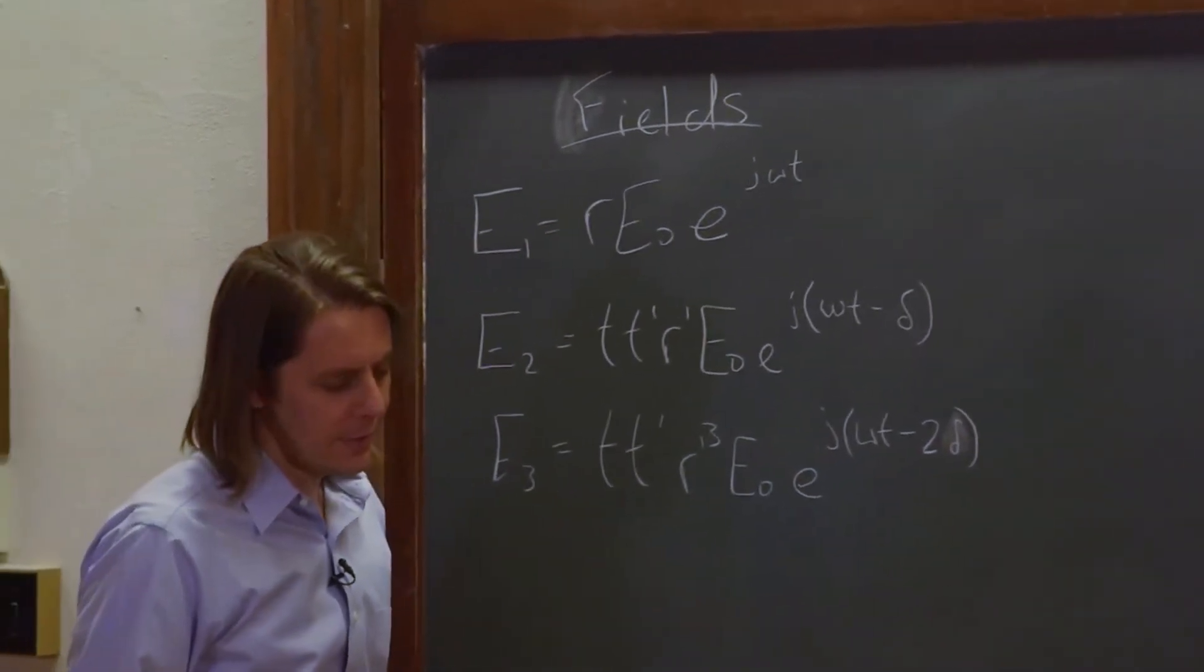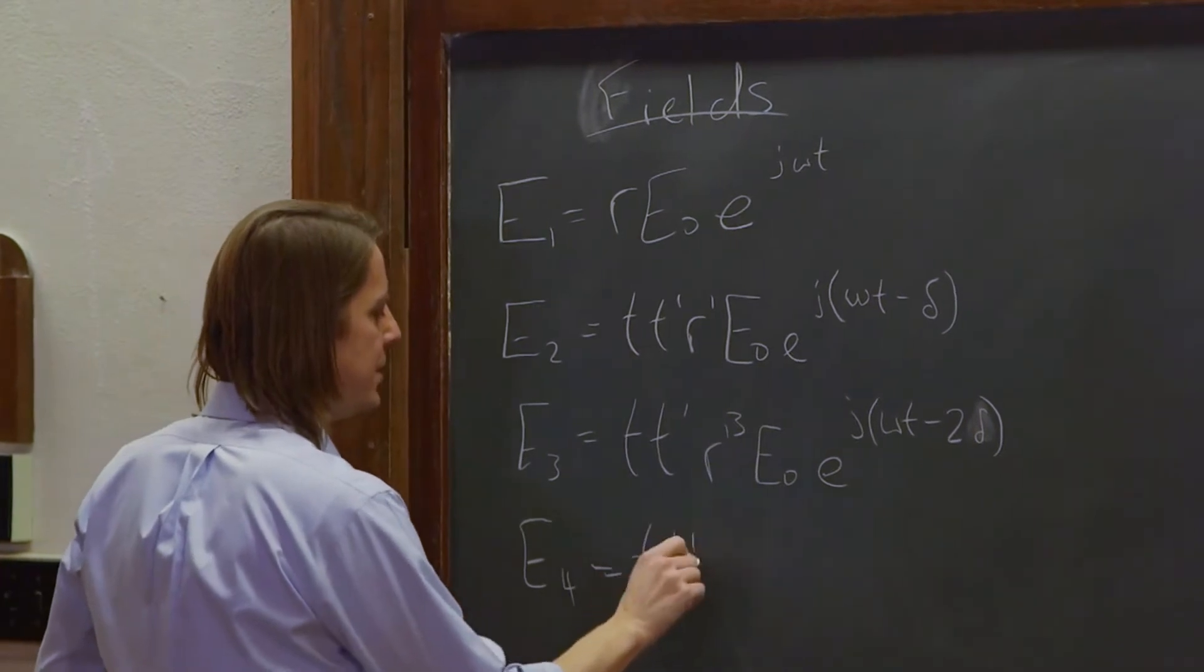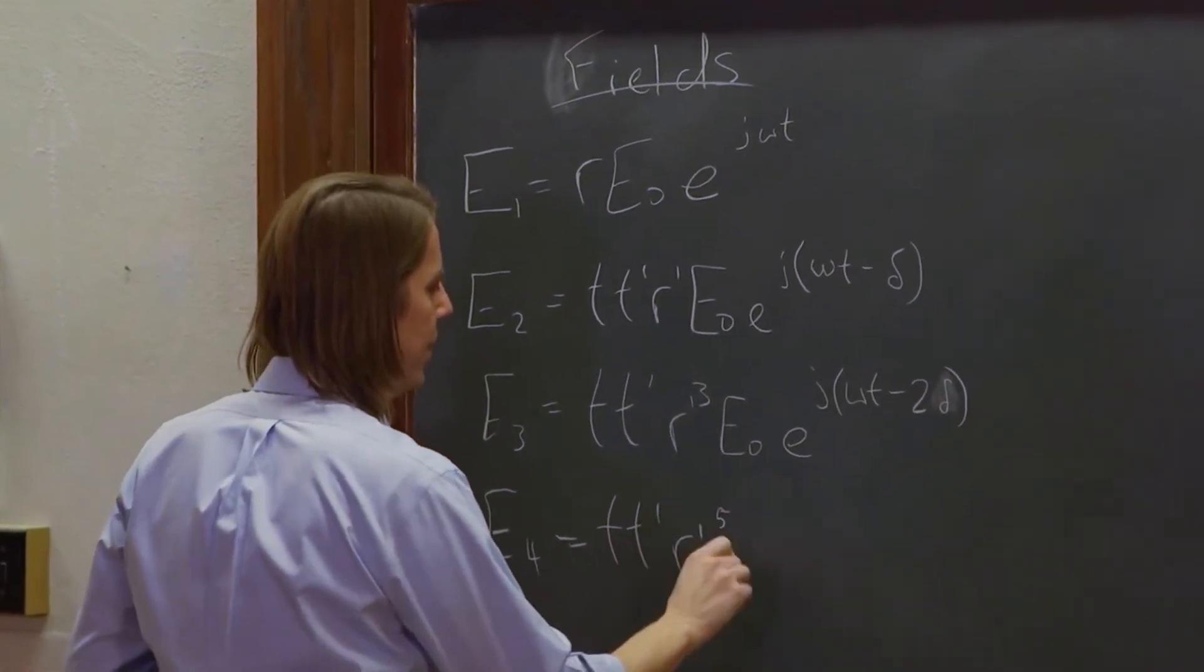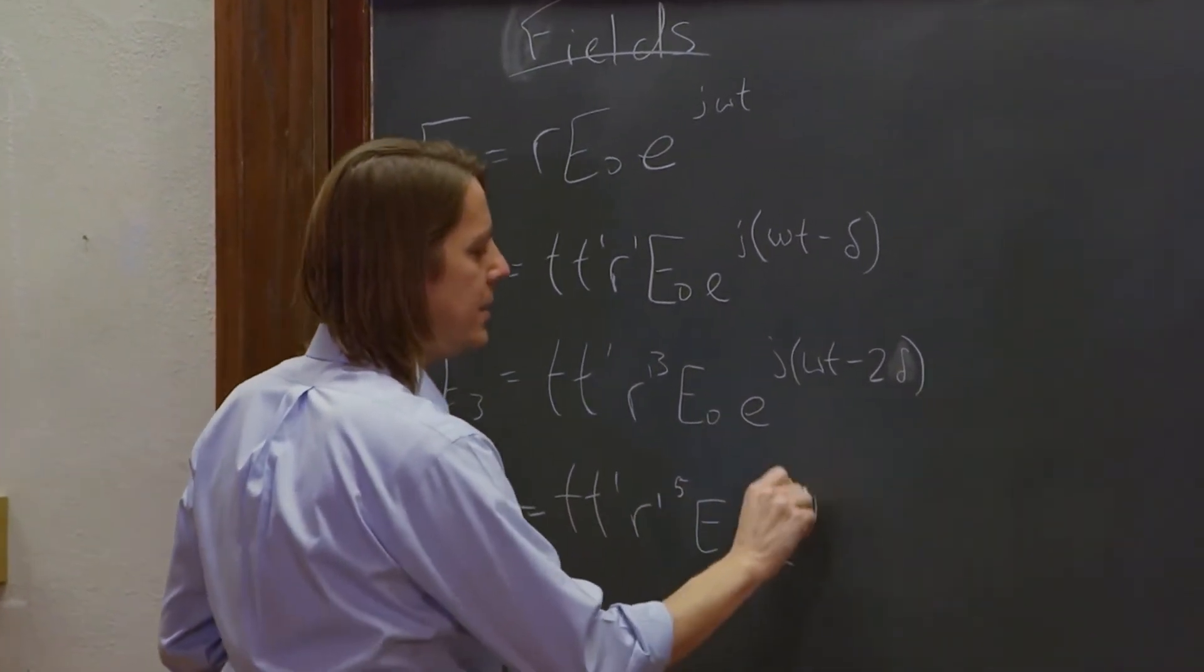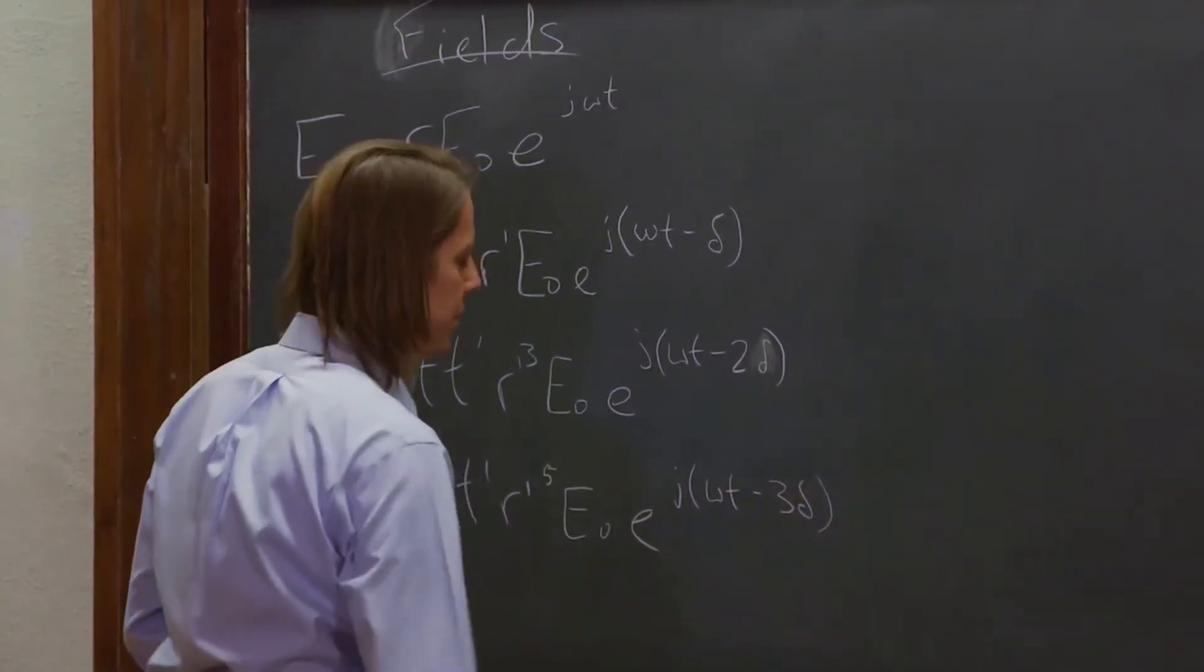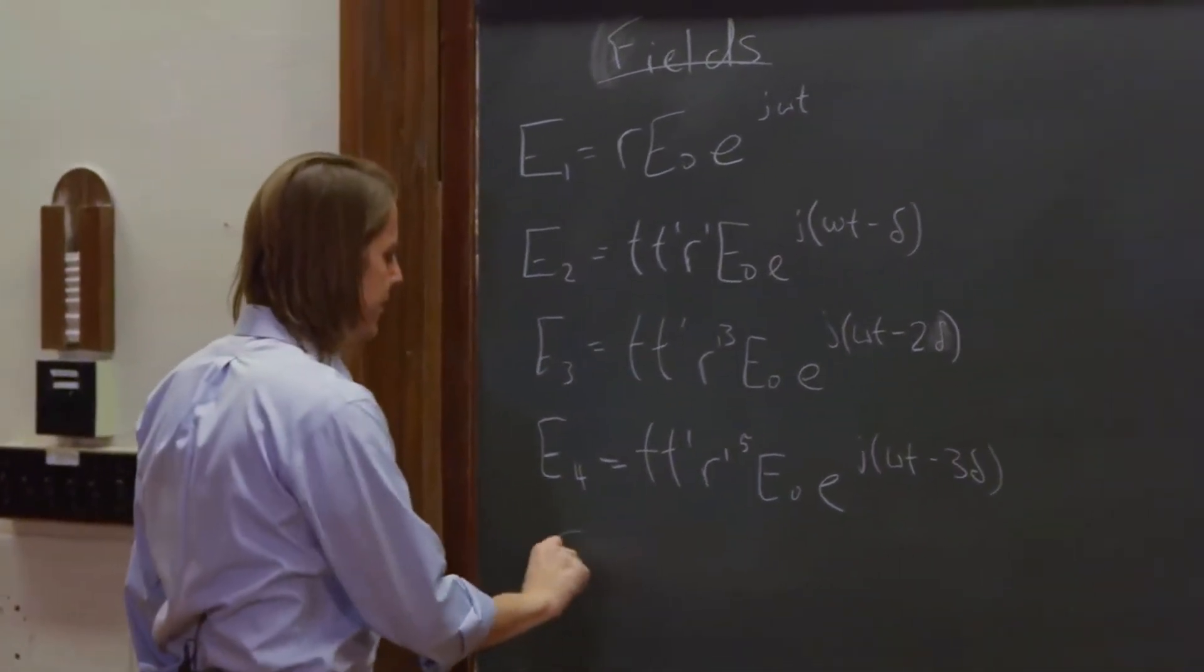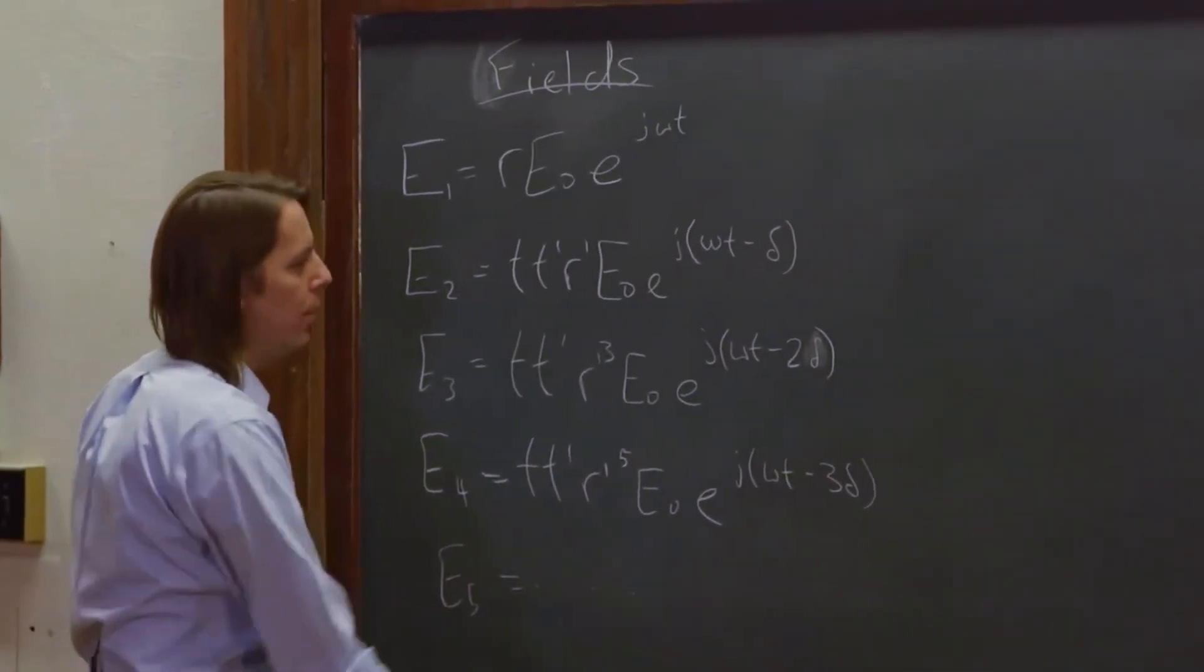And we can go on. E4 equals T, T prime, R prime to the fifth, E0 E to the J omega T minus three delta. And we could keep going, but we won't.